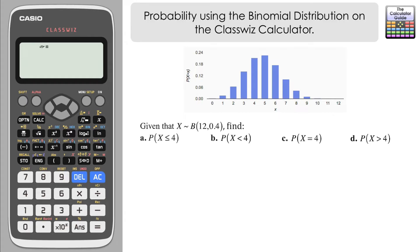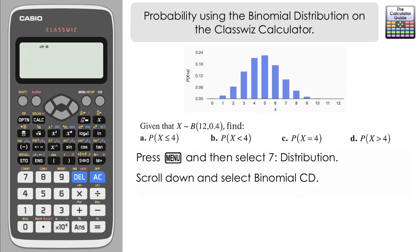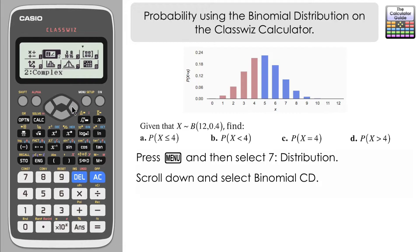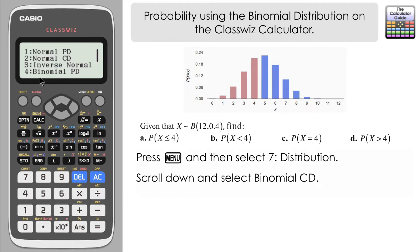So let's start off with the first one. We need to work out the probability that X is less than or equal to 4. We're going to access distribution mode for this. Press menu and then either 7 or navigate down to distribution. Now there are two distribution modes for binomial. We're going to use the second of these which is on the second menu first. Navigate down and then select 1 for binomial CD — that's binomial cumulative distribution. This is because we want not only the value of 4 but also values that are less than that as well.